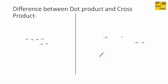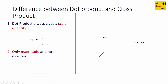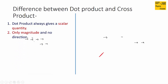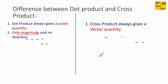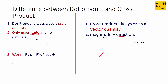The first difference is dot product always gives a scalar quantity, meaning the resultant quantity of dot product would have only magnitude and no direction. While cross product always gives a vector quantity with both magnitude and direction. For example, the dot product of force vector and displacement vector gives work, and work is a scalar quantity — it has only value and no direction.